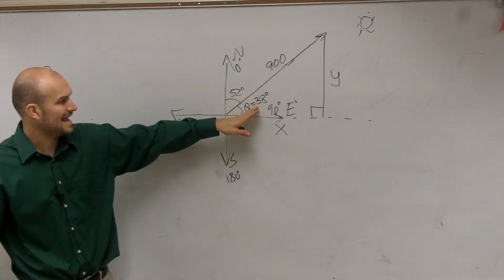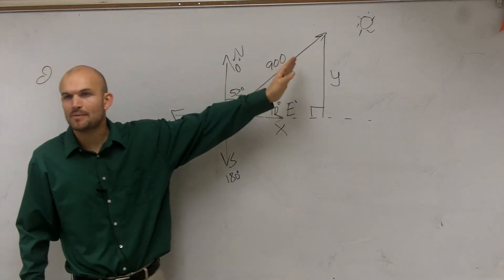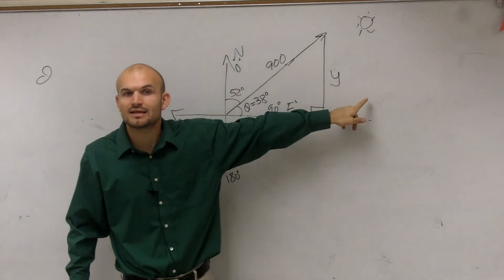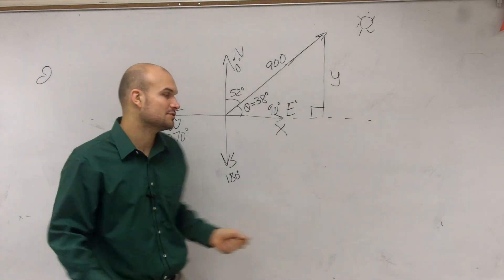So now we have an angle and we have the hypotenuse. They're asking us to find the adjacent side and the opposite side. So we're going to have to use our trigonometric function.